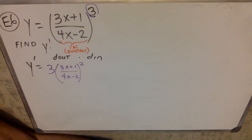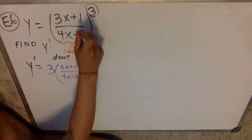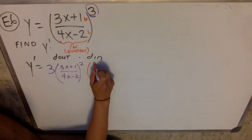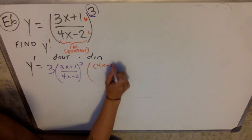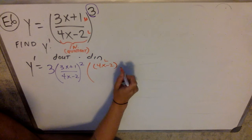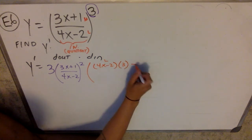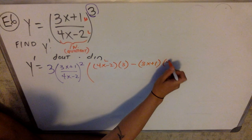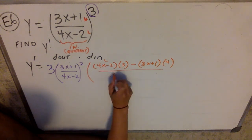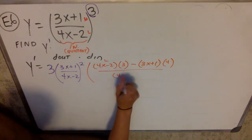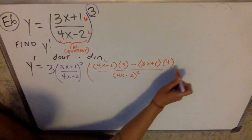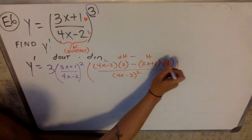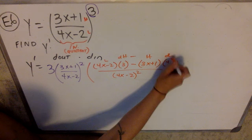The derivative of the inside is going to be a quotient rule, where I have a high function and a low function. I'm going to get: low d-high, minus high d-low, draw the line and then square the low function. I'm going to go ahead and label all those: low, d-high, minus high, d-low, draw the line and square the low.